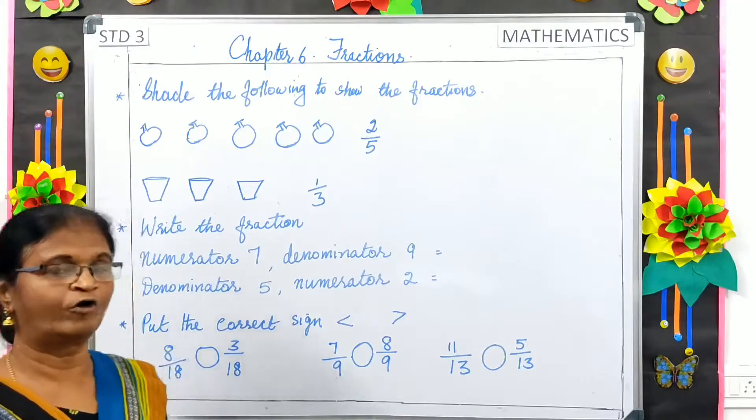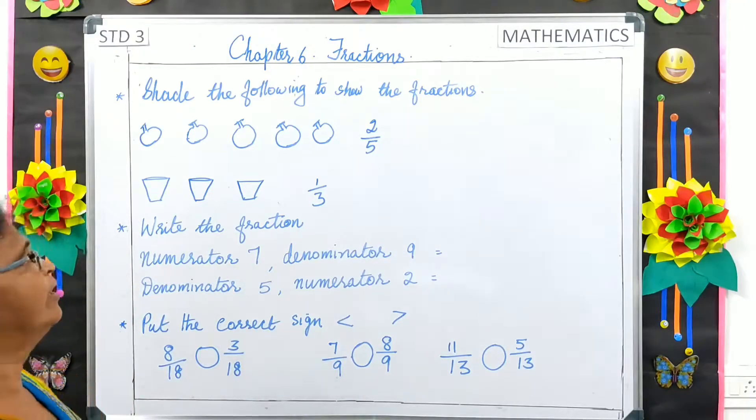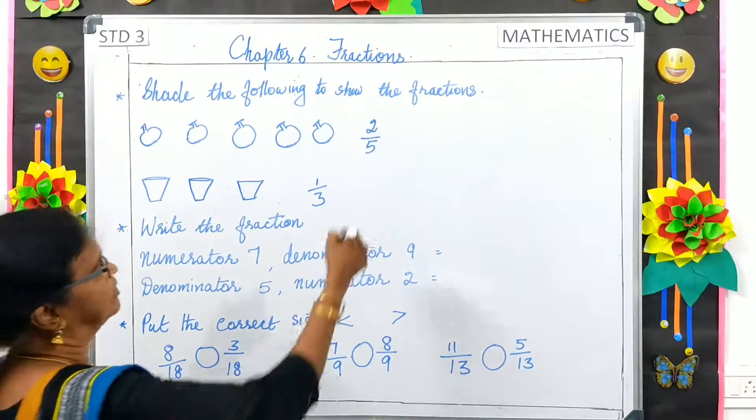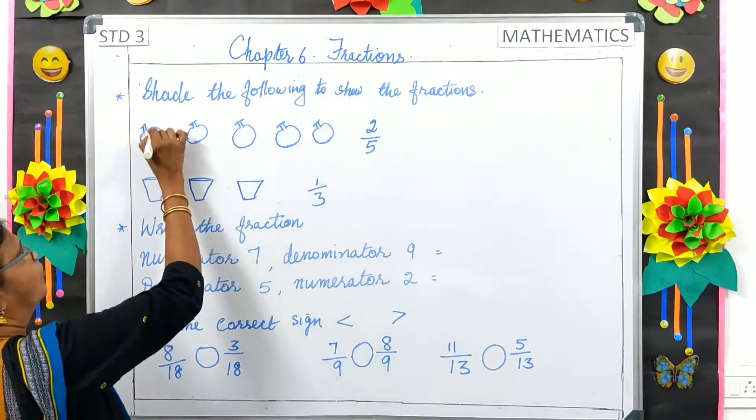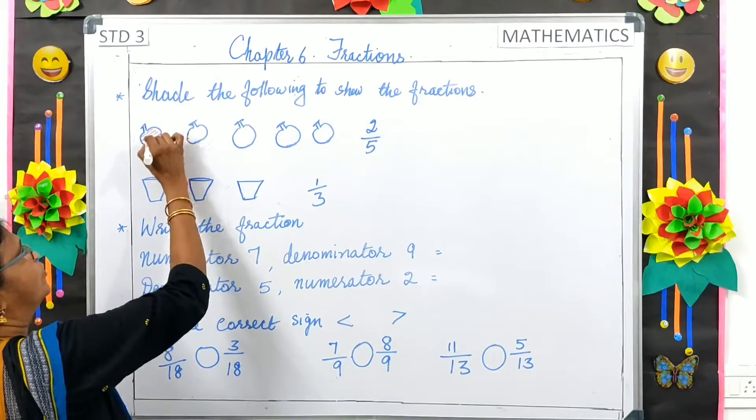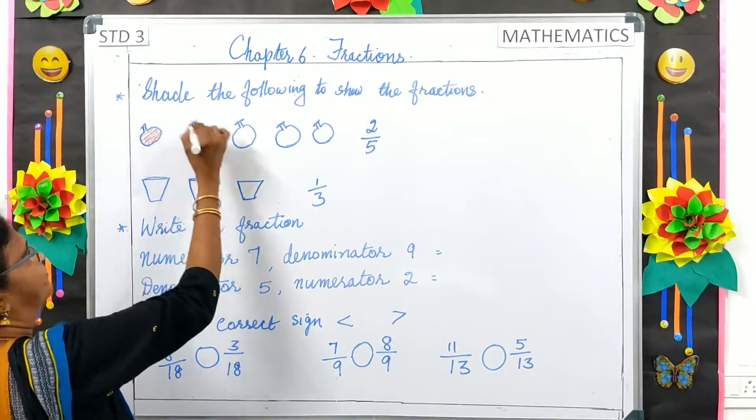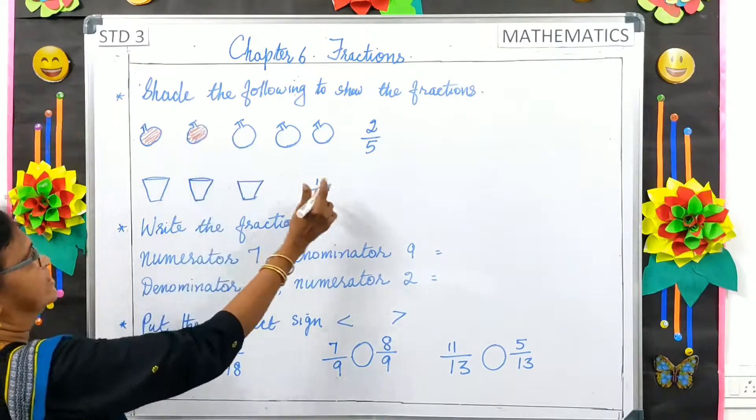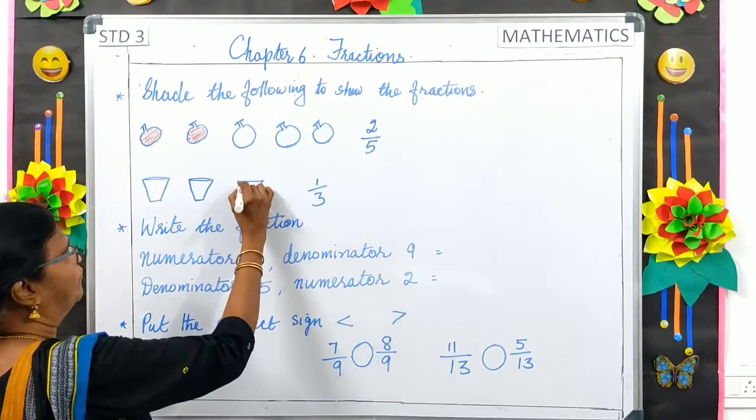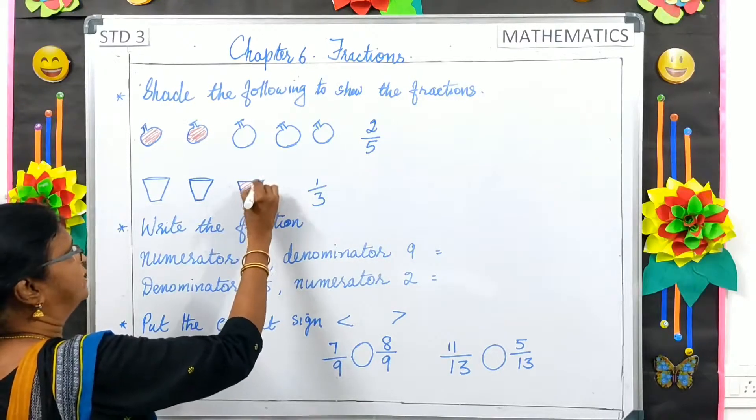Now, shade the following objects to show the fraction. First, 2 by 5. Numerator is 5, so we will shade 2 objects here. And this is 1 by 3, so we will shade only 1 object here.